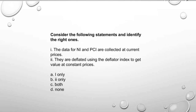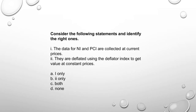As per the CSO classification, which of the following does not fall under the industry sector? Electricity and power generation, gas and water supply fall under industry. Transport and communication fall under the service sector, not the industry sector. The data for national income and per capita income are collected at current prices and then deflated using the deflator index to get the value at constant prices.